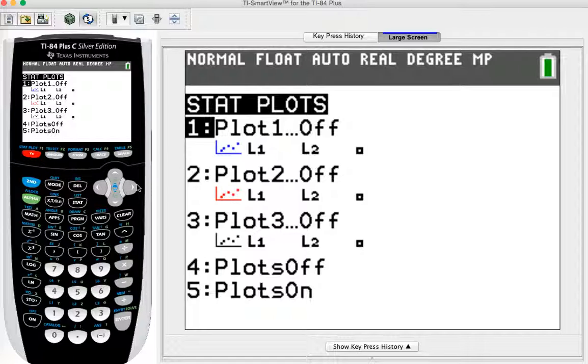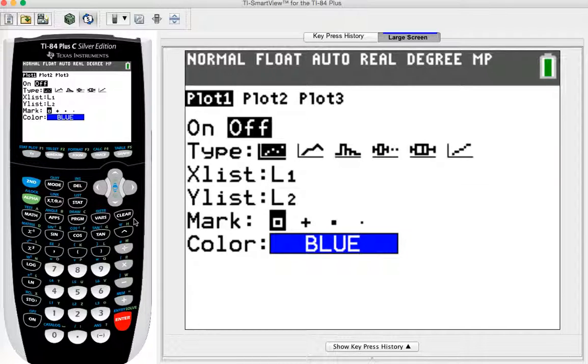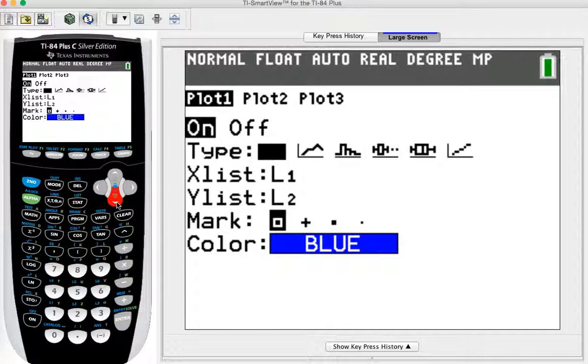And you can see that all the plots are off. I want to turn one of them on. So I'll just take this first one and I'll hit enter. And then from there, it has on flashing. I'm going to hit enter again so it switches to on, and then I have to choose type. And you can see I have various types here. There's a histogram right there. The flashing one is the histogram.